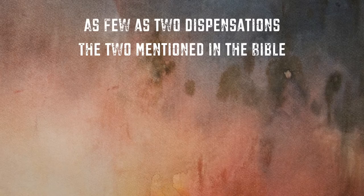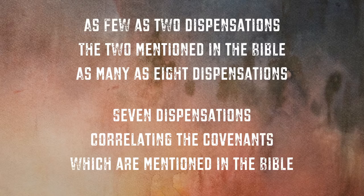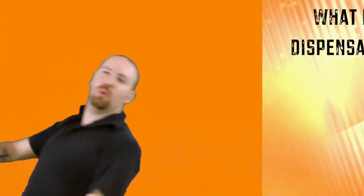Historians and Bible scholars have said that there are as few as two dispensations — the current dispensation and a future dispensation, because that's what the Bible says. Others say there are as many as eight dispensations, but most people say there are seven dispensations, pretty much correlating with the seven covenants. It is important to emphasize that the word dispensation is just a normal word referring to management or administration — there's nothing technical or theological about it. Anyone can use the word dispensation or believe in dispensations and not be a dispensationalist.